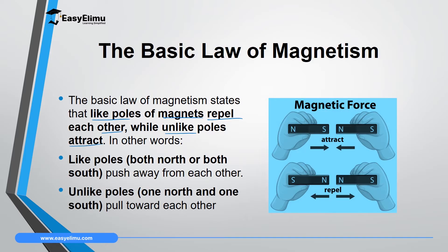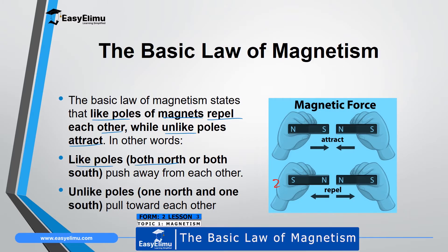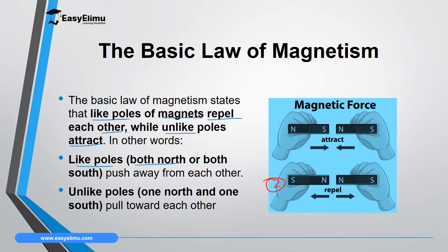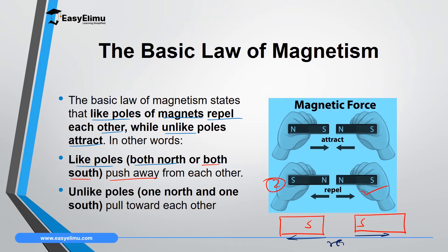When we talk about like poles, it means when you have both north pole and north pole — as shown in the second example on screen — close to each other. In this case, they will push away from each other; in the language of magnetism, we say they repel. Similarly, if you have south pole and south pole close to each other, they will also push each other away — they repel.